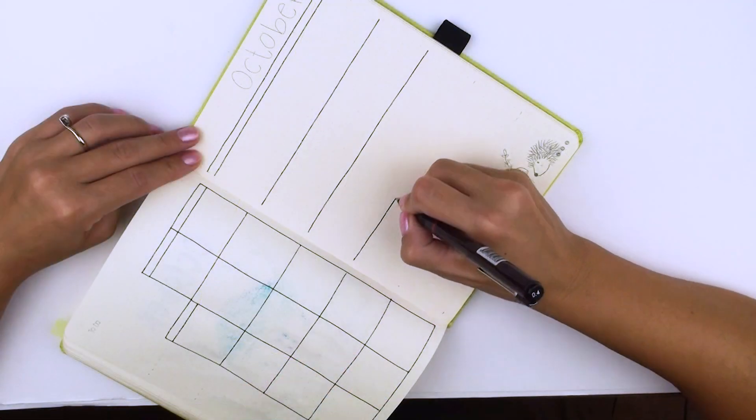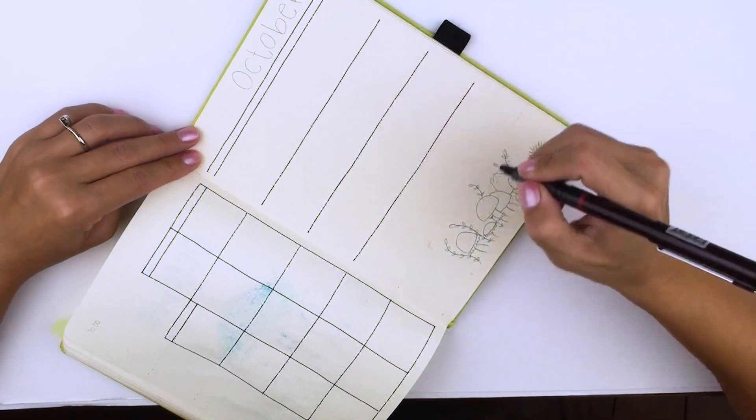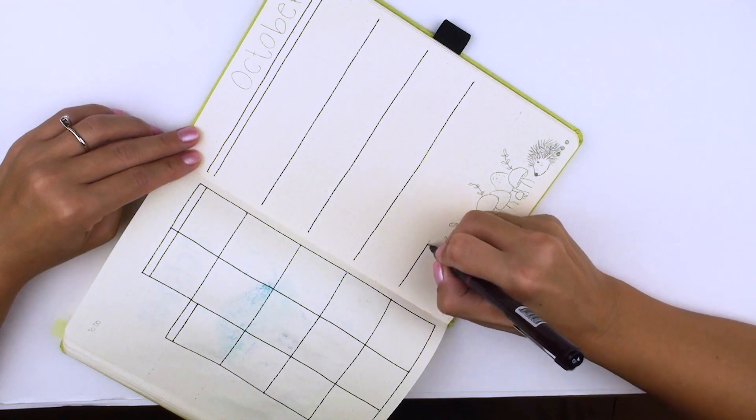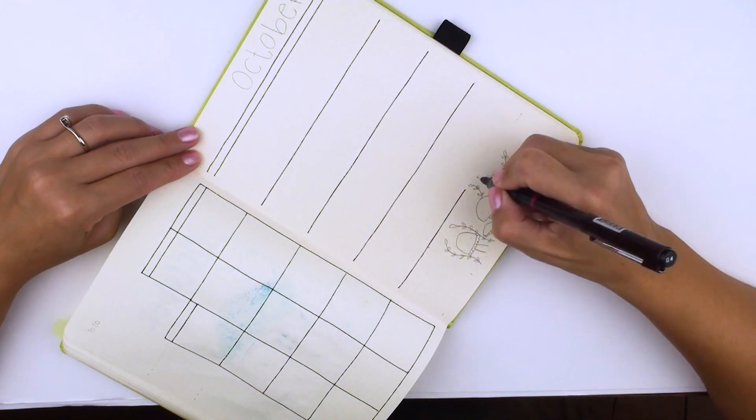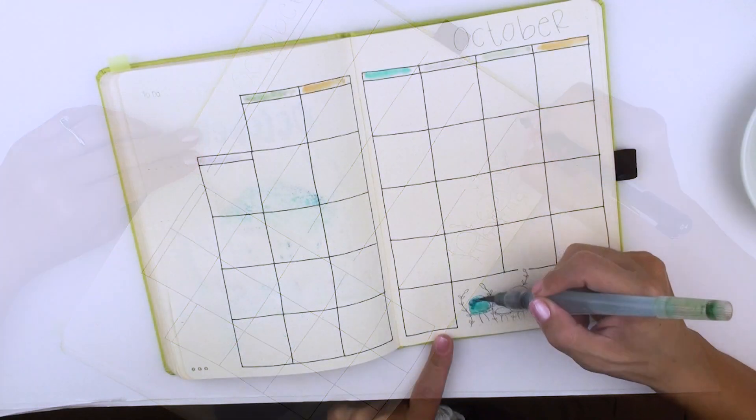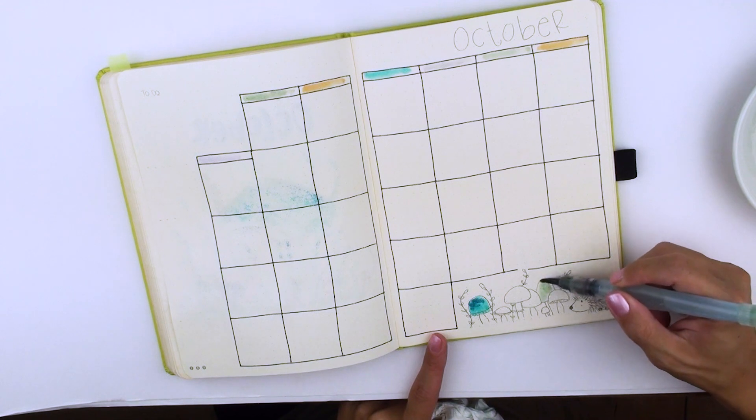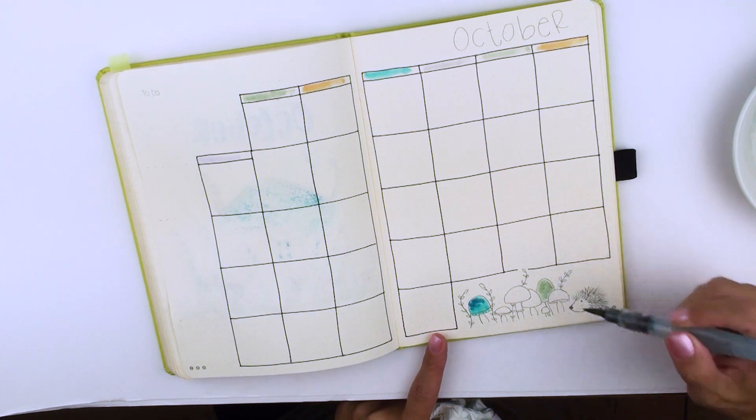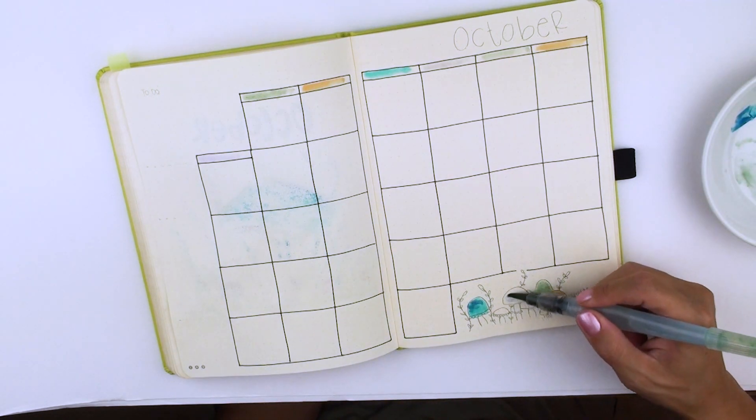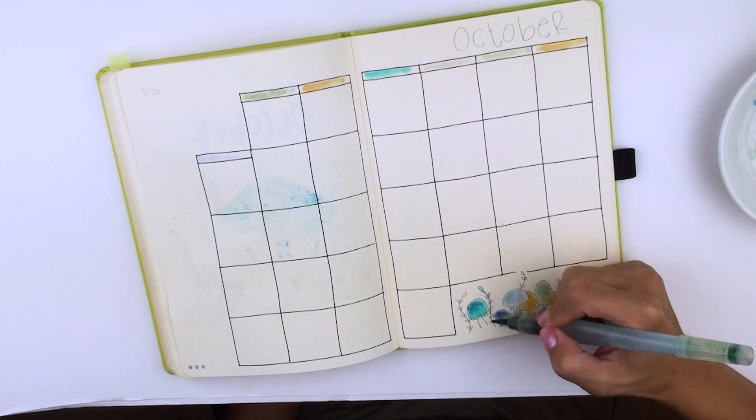Next comes my monthly spread. I use my usual grid for the monthly layout and I've also added a to-do list on the left for each week. I like it when I'm able to allocate specific tasks for each week of the month. I find that I am more productive and that I'm actually getting things done this way.